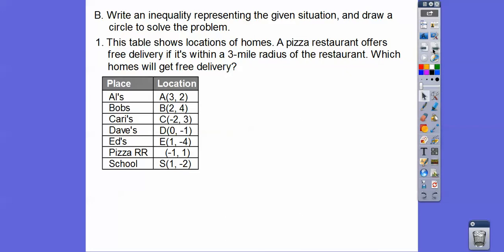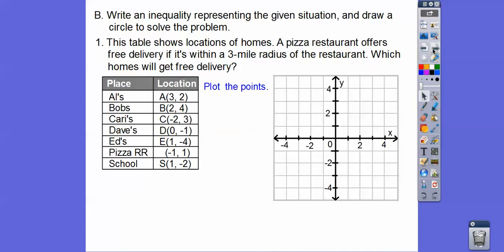Here's Al's, Bob's, Carrie's, Dave's, Ed's, and then we got a pizza, and then we got the school here. We're going to use this table for a couple of problems. Let's plot all these points. Al is going to be at (3, 2). So, over 3, up 2 is Al's place. Bob is over 2, up 4. There's Bob right there. And the pizza restaurant is negative 1, 1. So, over 1, up 1. We'll put R, R there. And then all the other points are going to be graphed right there.